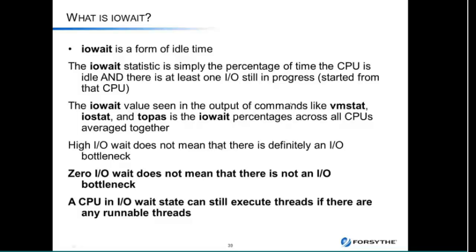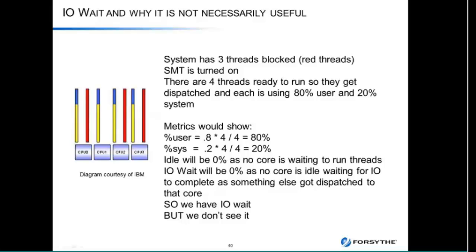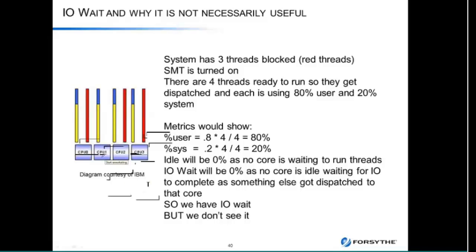To give you an example: this system shows zero percent IO weight — three red threads are blocked, but I have four threads executing, so every CPU is doing work. Nobody is waiting on IO as far as CPUs are concerned, but we have three IOs outstanding. Conversely, if all the yellow threads went away and I just had the three red threads, I would see 75 percent IO weight — because even though there's no work to run, three threads are blocked and no other threads are ready to run. So IO weight only matters if there's workload waiting to run. It can be misleading.